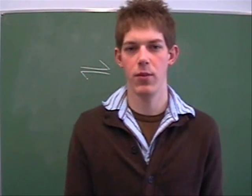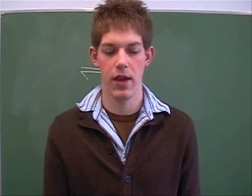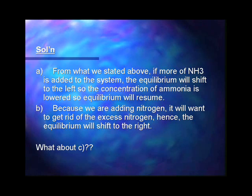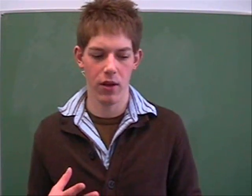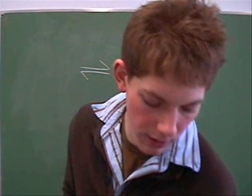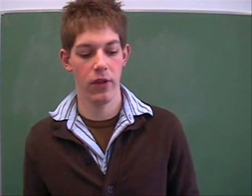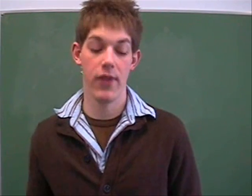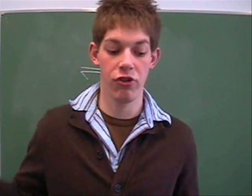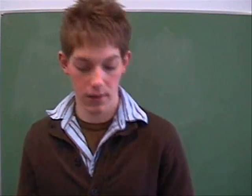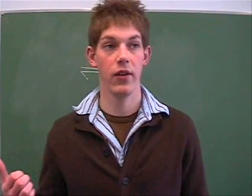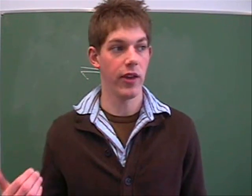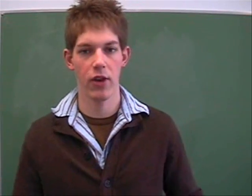With C, we're actually removing some of the ammonia, and that's the little problem. We just have to adjust the definition of Le Chatelier's principle: if you remove a component of the equilibrium, then the opposite effect will occur — the equilibrium will shift in the direction to create more of that product. So for C, the equilibrium is going to shift to the right so that we actually have more ammonia.